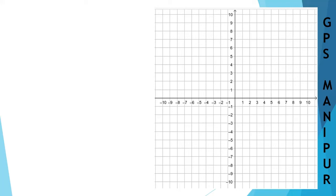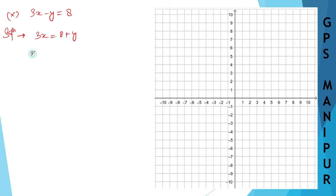We are doing Exercise 4.2, Question 2, Roman number 10. The question is 3x minus y is equal to 8. Transferring y to the other side, it will be 3x is equal to 8 plus y.